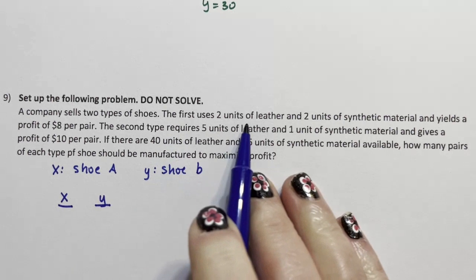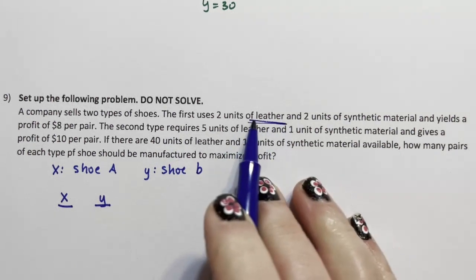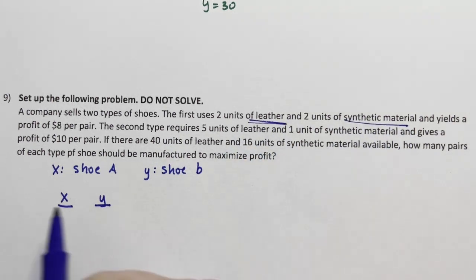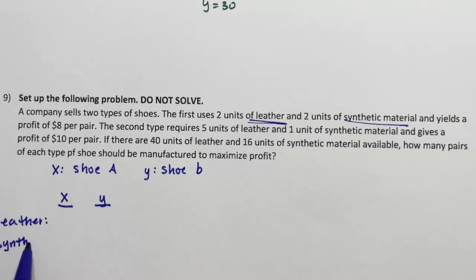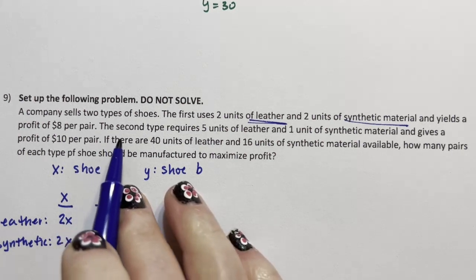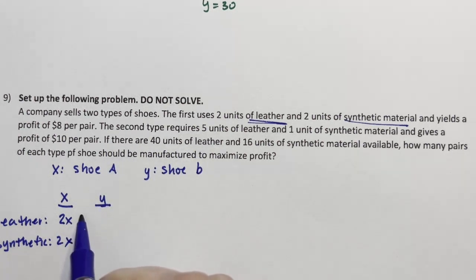So we have X and we have Y. And we have leather and synthetic material. So for shoe A, it uses two units of leather and two units of synthetic. And the second type uses five units of leather and one unit of synthetic.